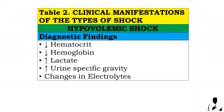Diagnostic findings in hypovolemic shock: decreased hematocrit, decreased hemoglobin, increased lactate, increased urine specific gravity, and changes in electrolytes.